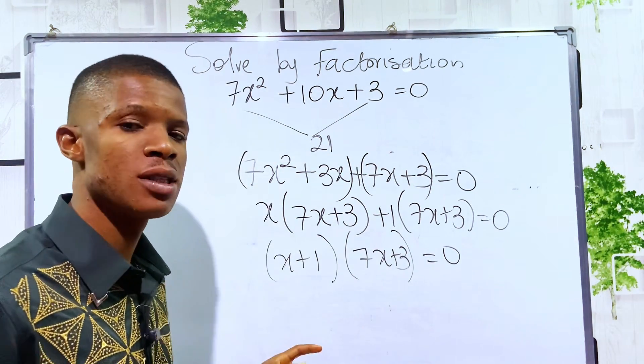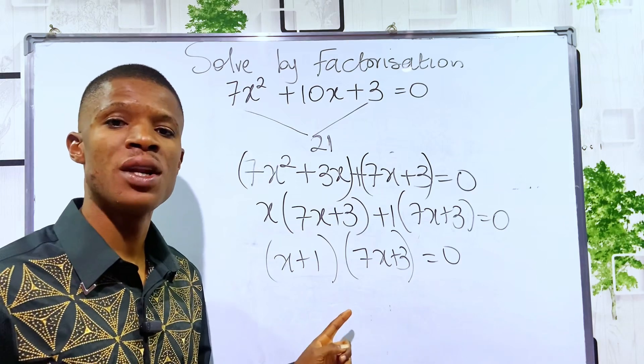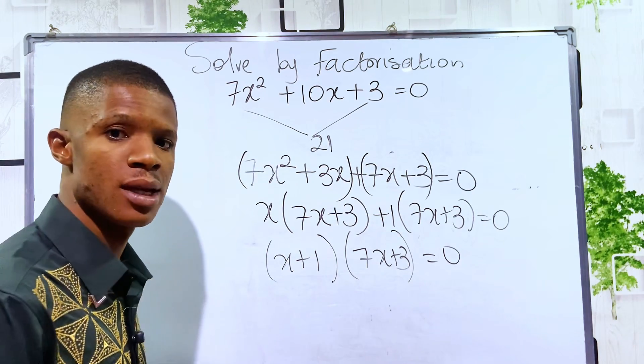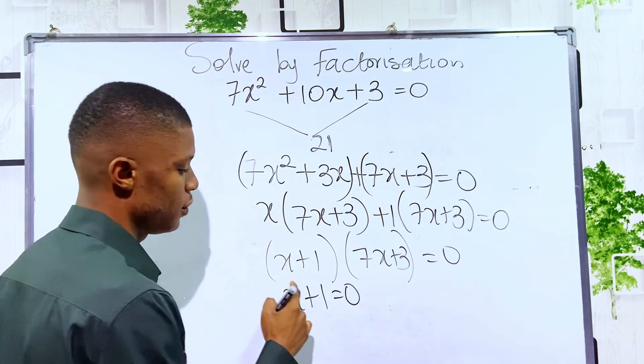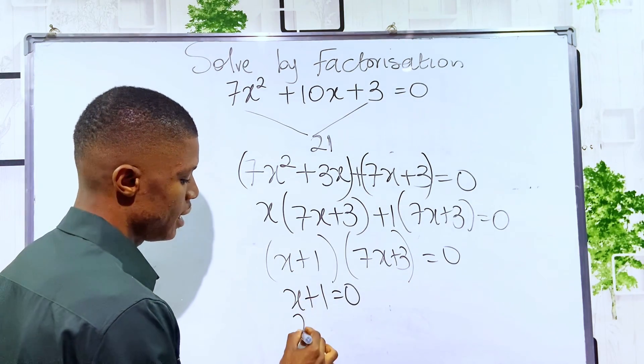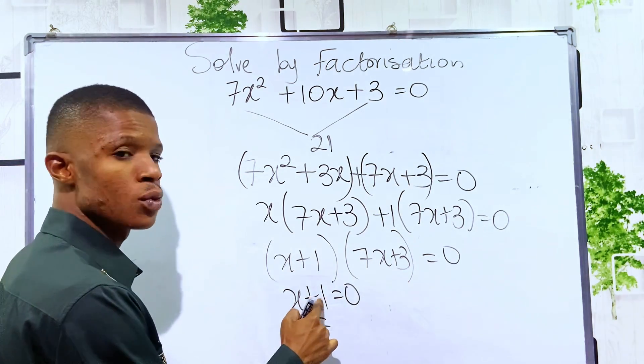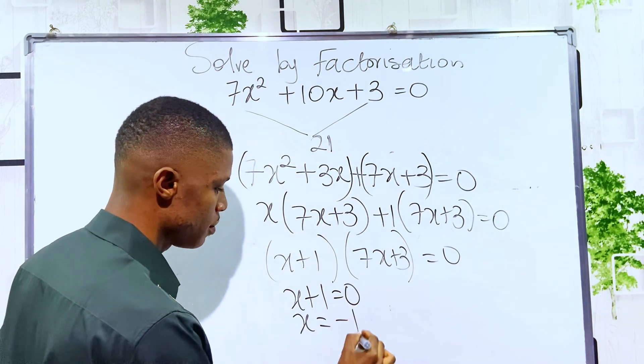Since two terms multiply to get 0, that means one of them is 0 or both of them are 0. We have x plus 1 equals 0 for the first bracket, meaning that x equals negative 1.